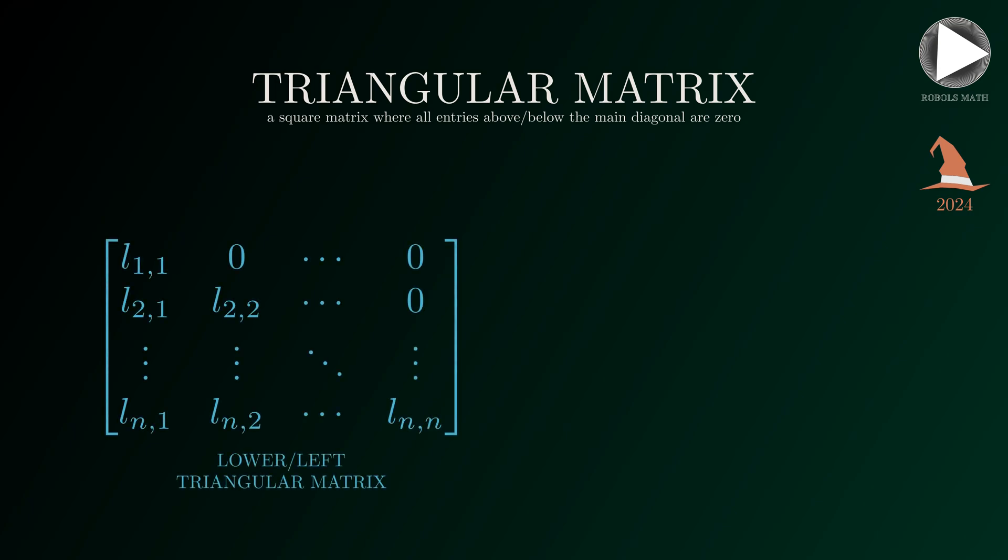If the zeros are above the diagonal, we call that a lower or left triangular matrix. If the zeros are below the diagonal, we call that an upper or right triangular matrix.